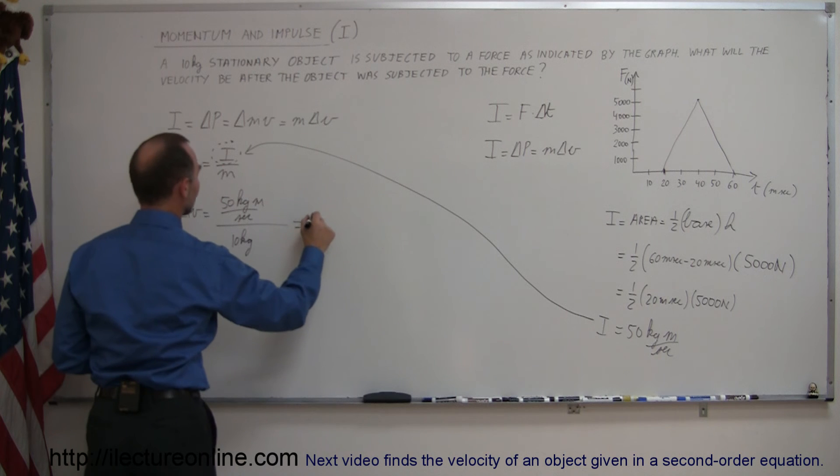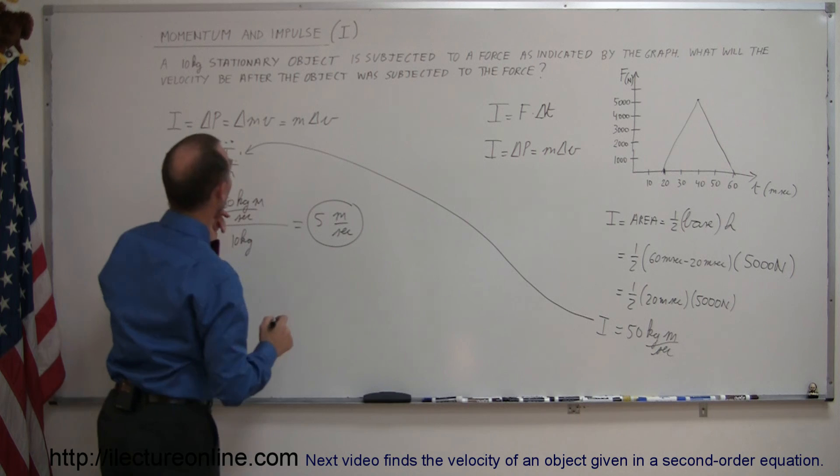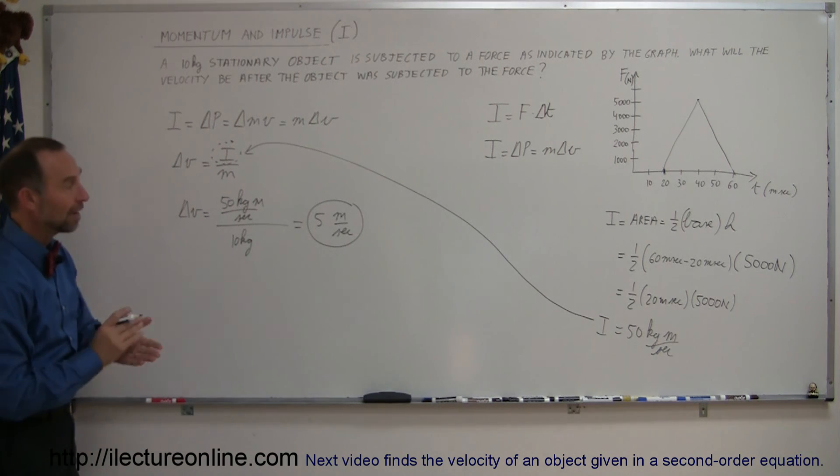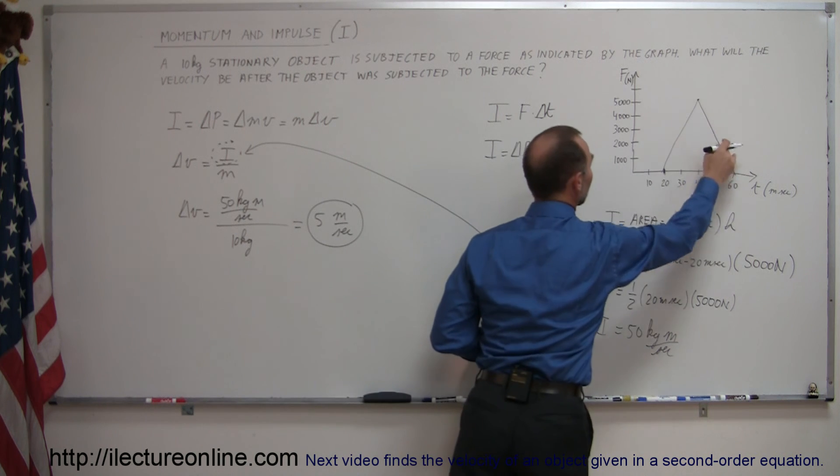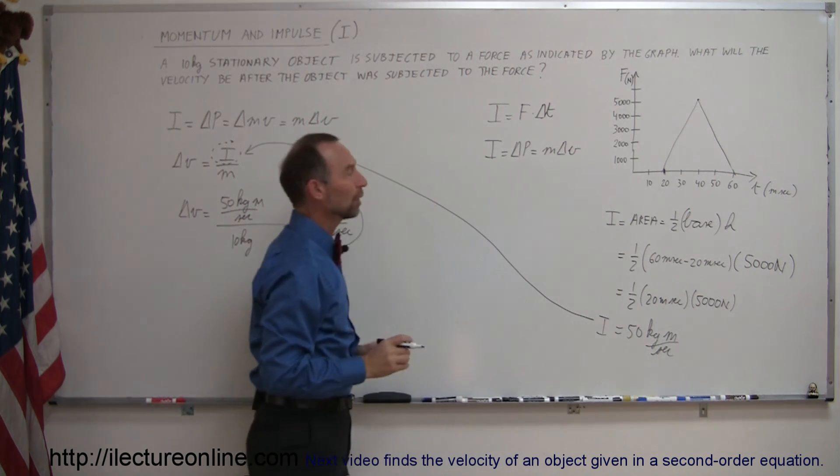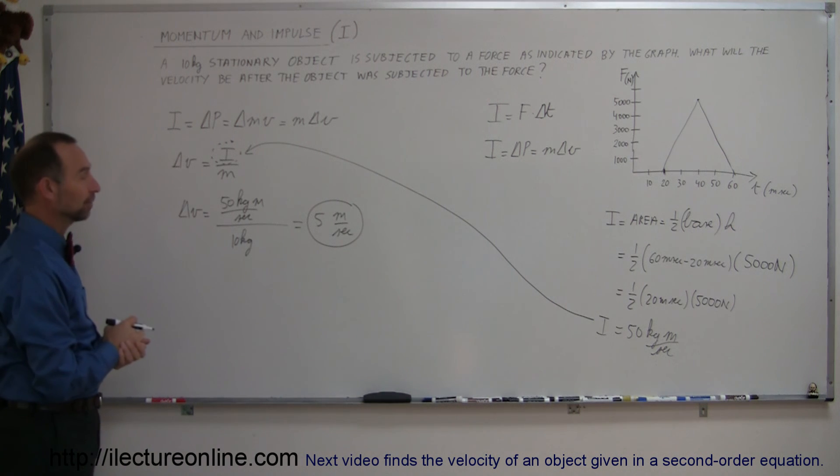So this is equal to 5 meters per second. So after that object was subjected to a force that changed from 0 to 5000 newtons and back over a period of about 40 milliseconds, the object will now have a velocity of 5 meters per second.